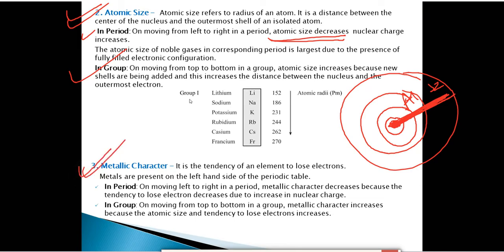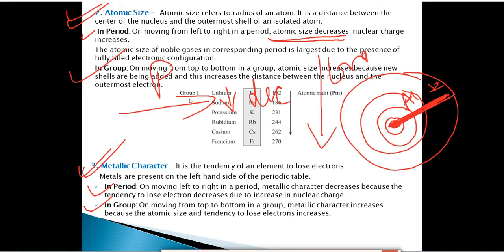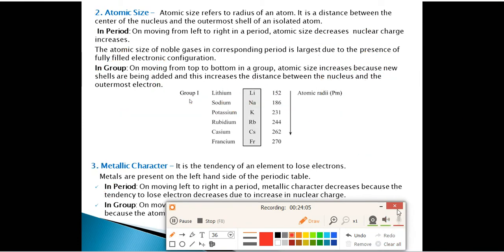Metallic character is the tendency of an element to lose electrons. In a period, moving from left to right, metallic character decreases because the tendency to lose electrons decreases due to increasing nuclear charge. In a group, moving from top to bottom, metallic character increases because atomic size increases and the tendency to lose electrons also increases.